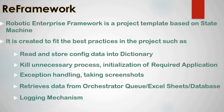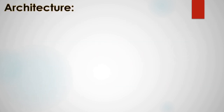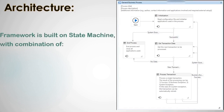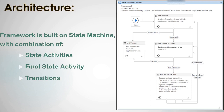Now that we are familiar with REFramework, let's try to understand its architecture. When you create a project in UiPath using REFramework, you get a project structure built on a state machine with a combination of state activities, final state activities, and transitions — all terms we have learned in the session on state machines. You can check out that video for a quick reference.